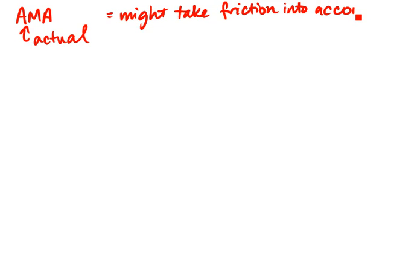Actual mechanical advantage tells us what's really happening because it might take friction into account. Now remember, friction is a force that opposes the motion. So that means you need to put in a little bit more force than normal.